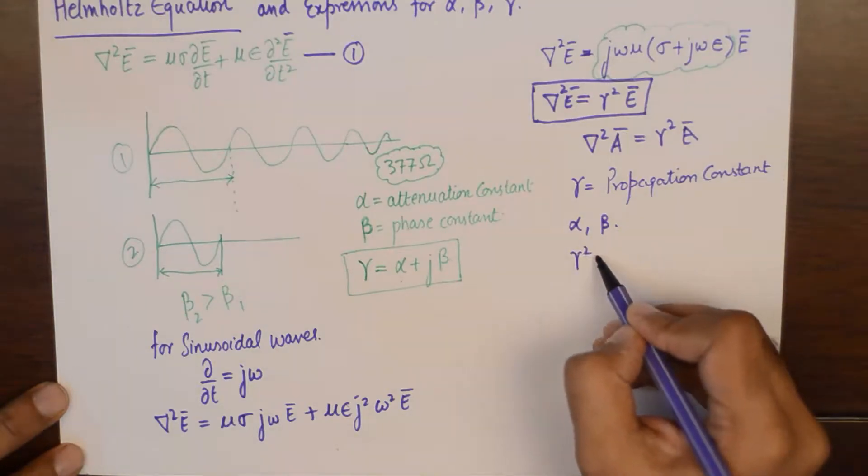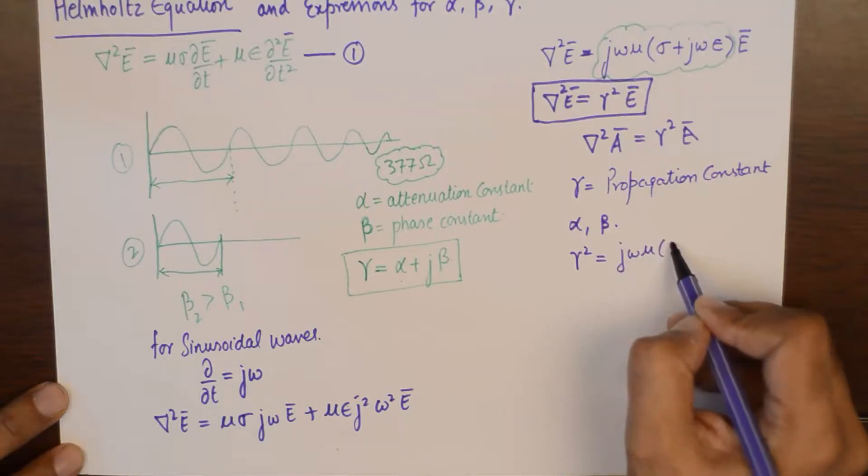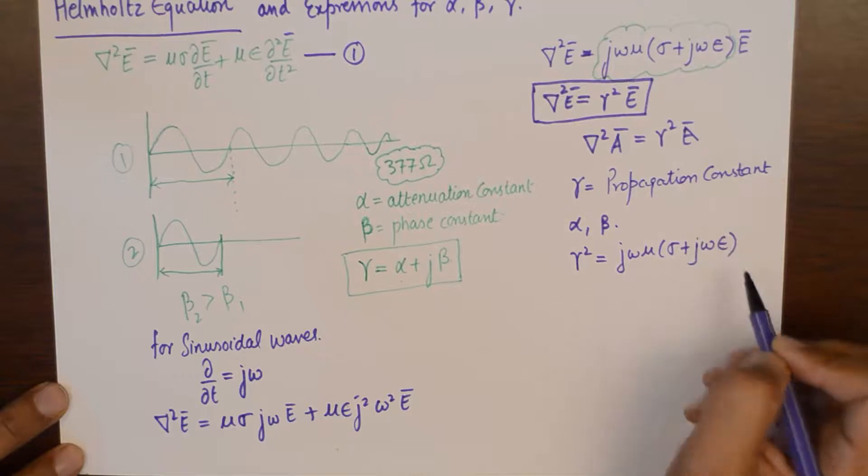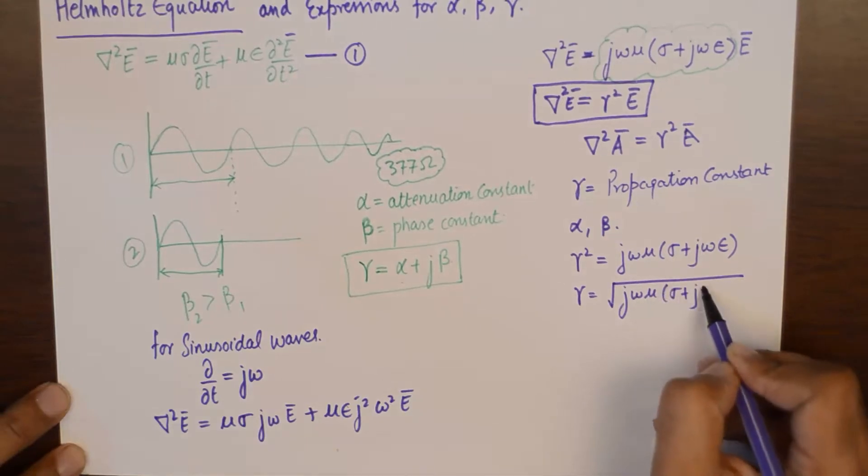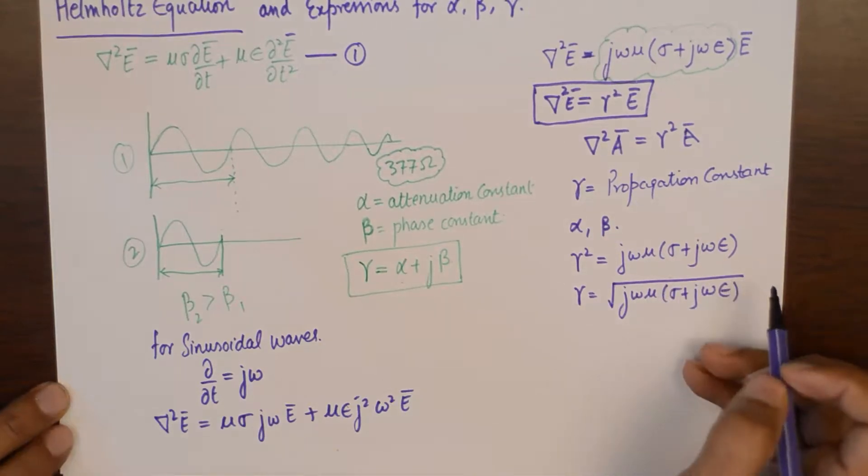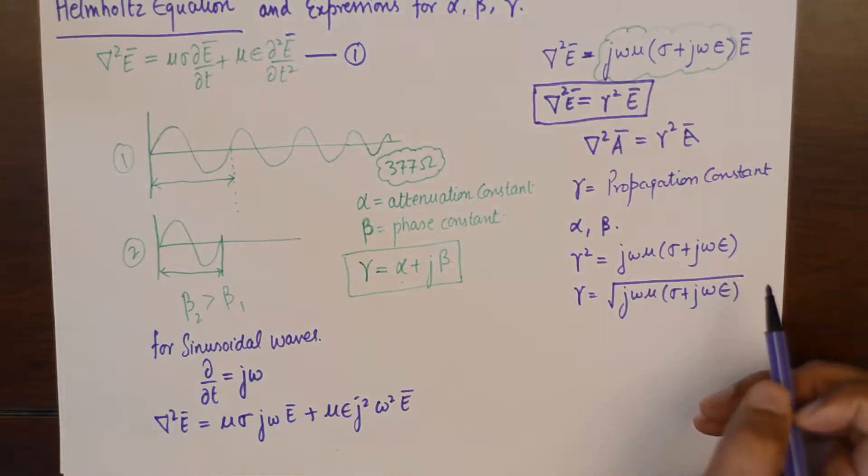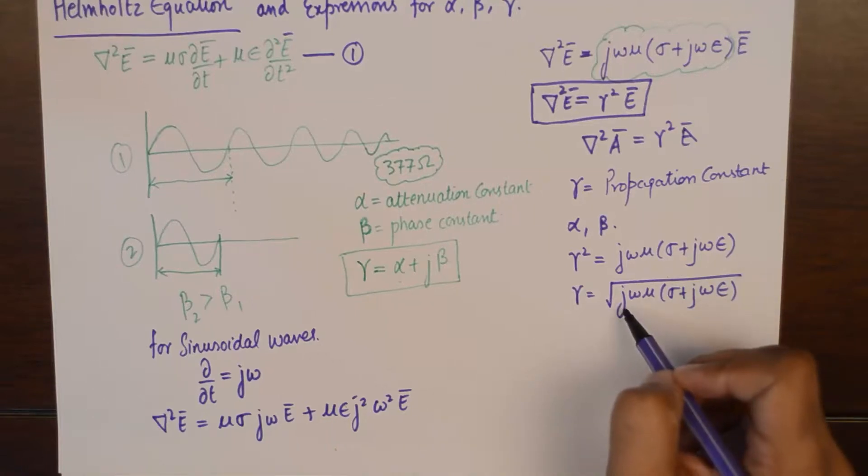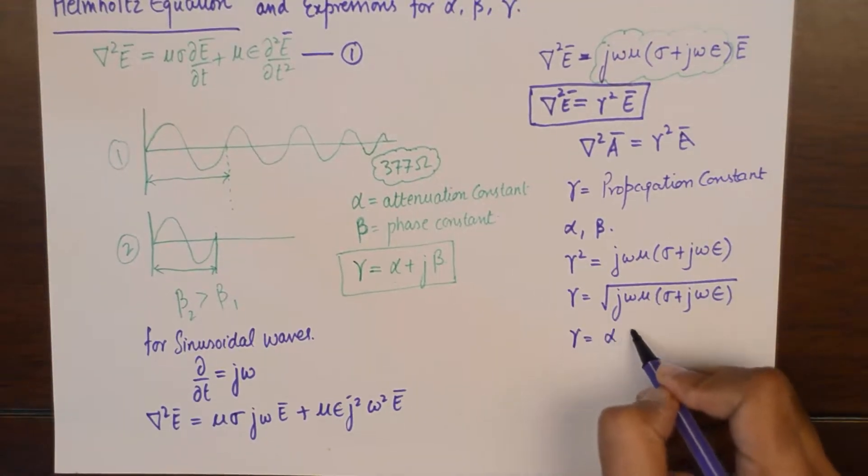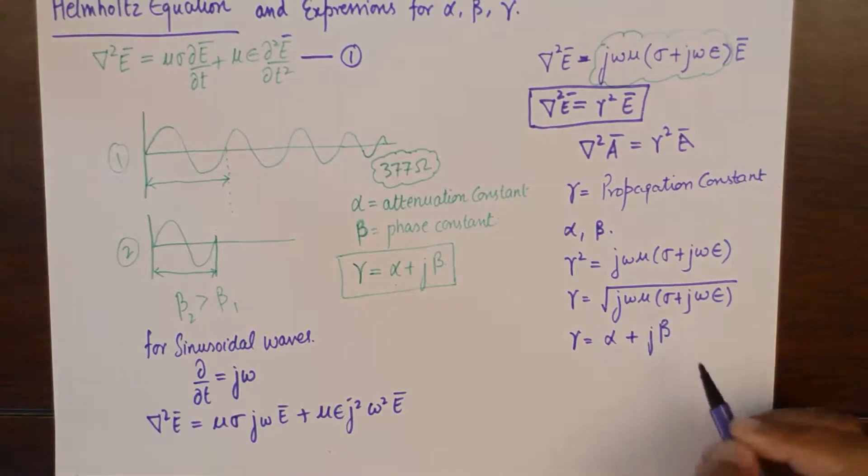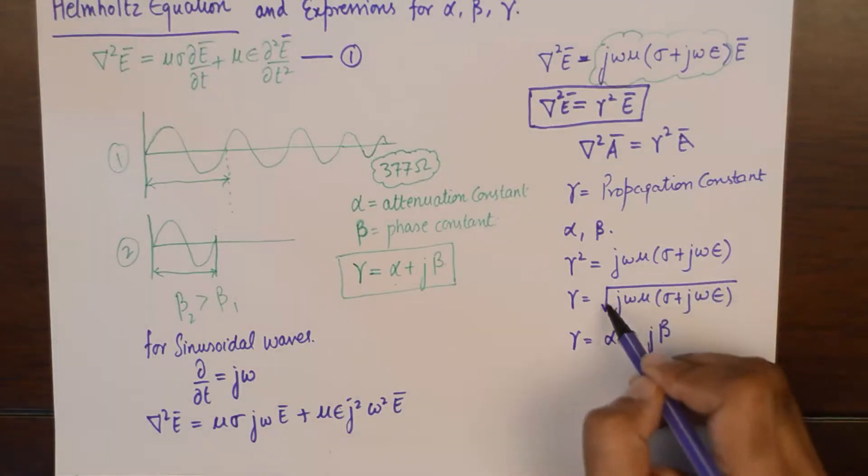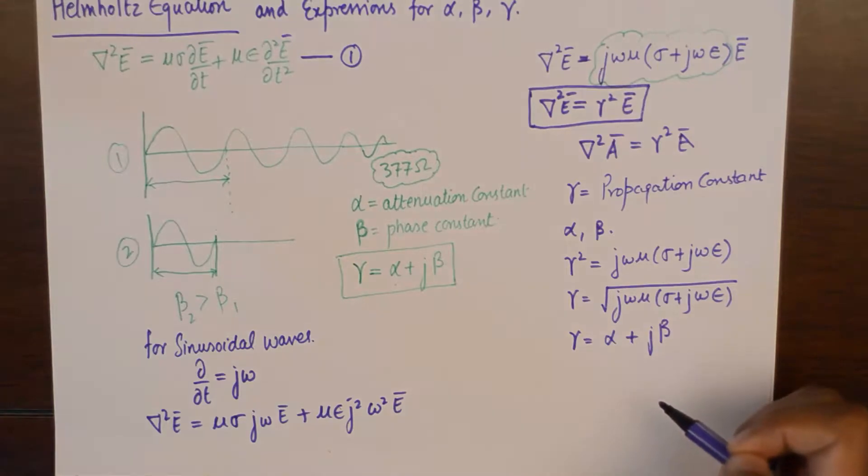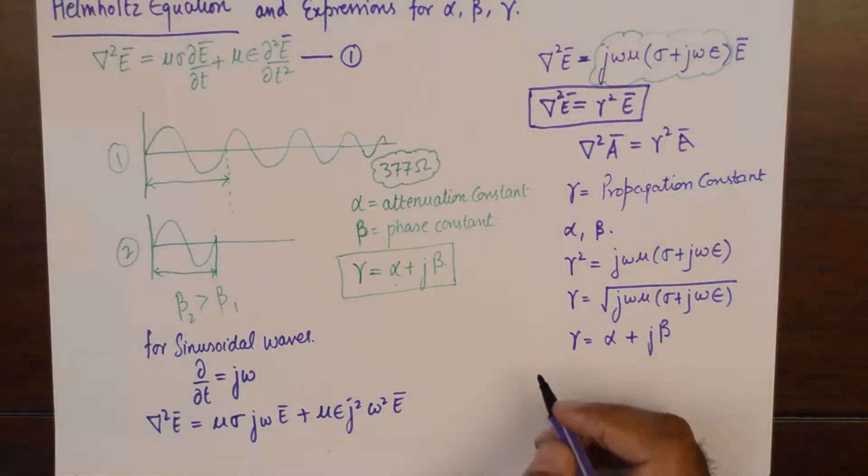What we have here is gamma squared equals j omega mu into sigma plus j omega epsilon, or gamma is equivalent to the square root of this term. Now extracting real and imaginary parts from this term should give us alpha and beta. So in other words, we have alpha plus j beta is equivalent to this term in the square root. After solving, we get the value of alpha.